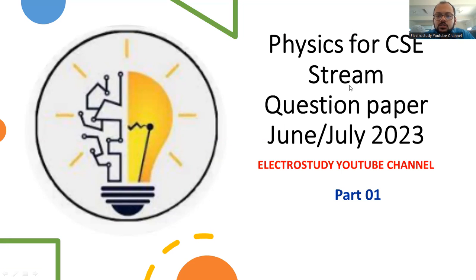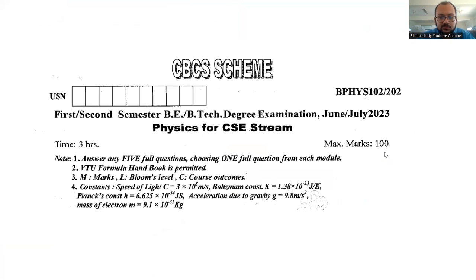Welcome back to the question paper discussion of physics for computer science and engineering scheme. The exam happened in June-July 2023. In this session, I'm going to cover the probable questions asked from modules 1 and 2. We can have a brief discussion. You can see this is the way the question appeared for the examination.